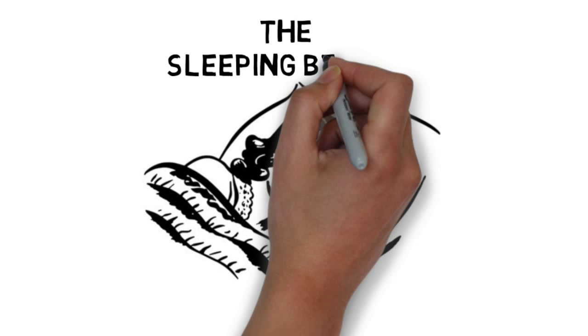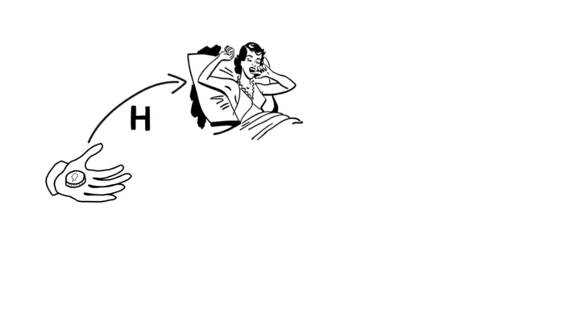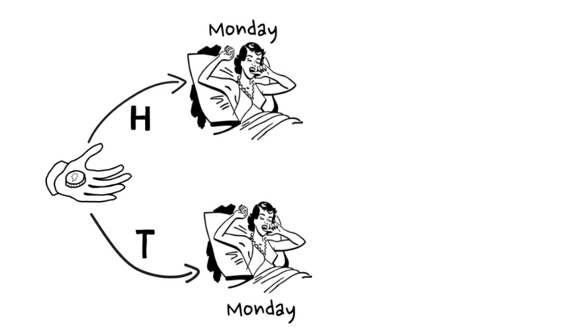Sleeping Beauty has agreed to participate in an experiment. The scientist tells her: I'm going to put you to sleep on Sunday night, and then I'm going to flip a fair coin. If the coin comes up heads, I will wake you up on Monday morning. If instead the coin comes up tails, I will again wake you up on Monday morning, but this time I'll put you back to sleep and wake you up again on Tuesday morning.